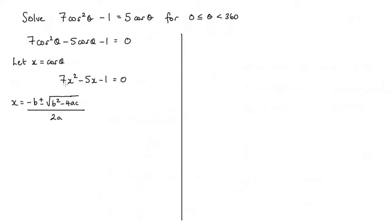Now in this particular example, we know that a is equal to 7, we have b is equal to negative 5, and c is equal to negative 1.